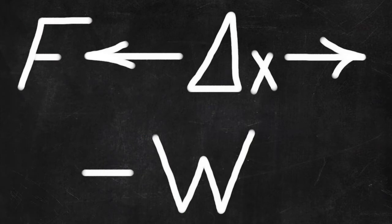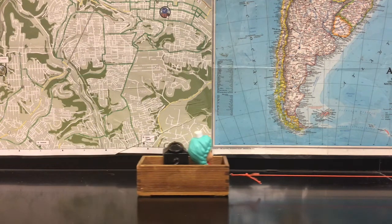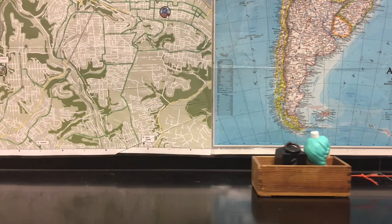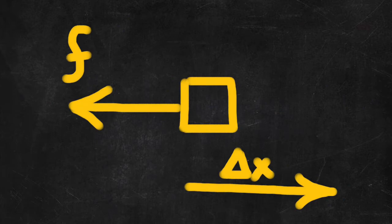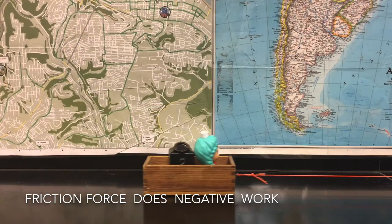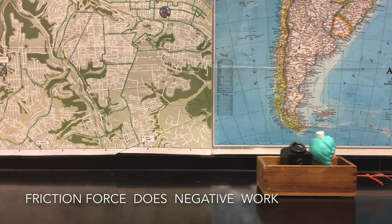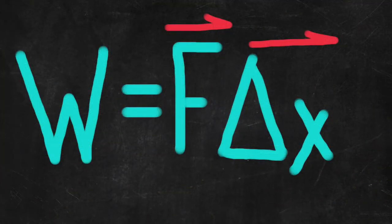And remember, when the force and displacement are opposite, work done is negative. Same situation. Ignore that pulling force. It balances the friction force. And pay attention only to the friction force acting backward. The force and the displacement are opposite. So work done by the friction force is negative. Work done by the pulling force is positive.